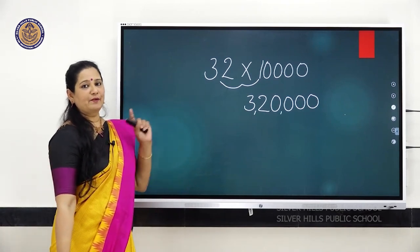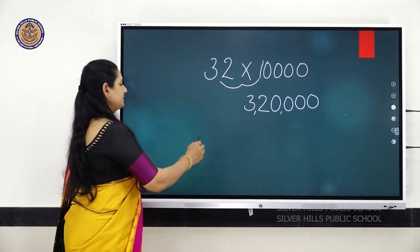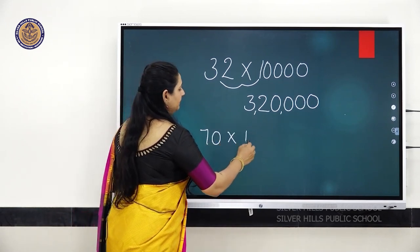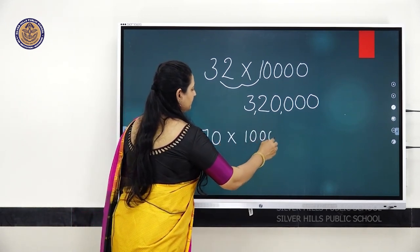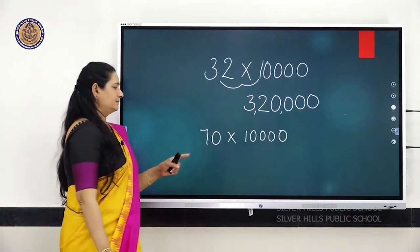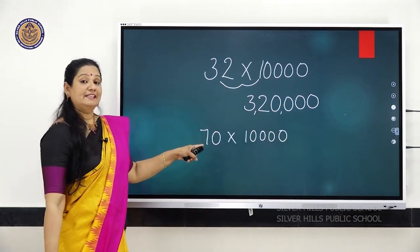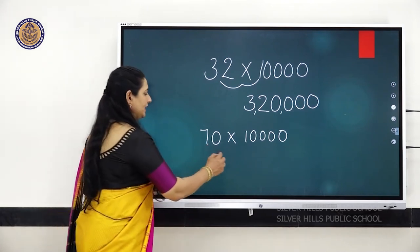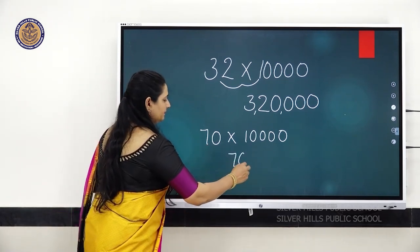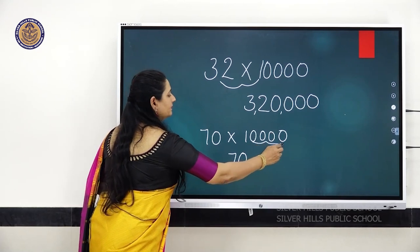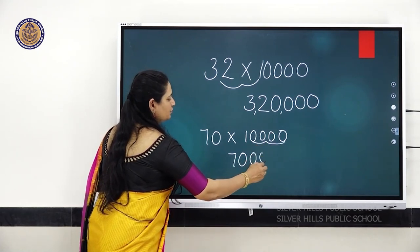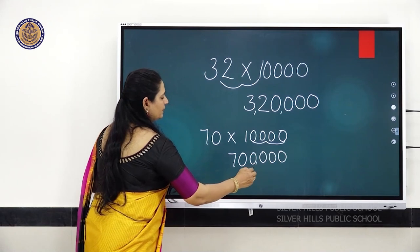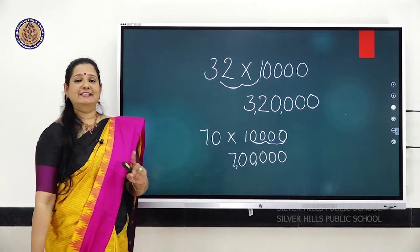Let us try one more example. 70 multiplied by 10,000. First write the number 70, then write 4 zeros. So your answer will be 7,00,000.